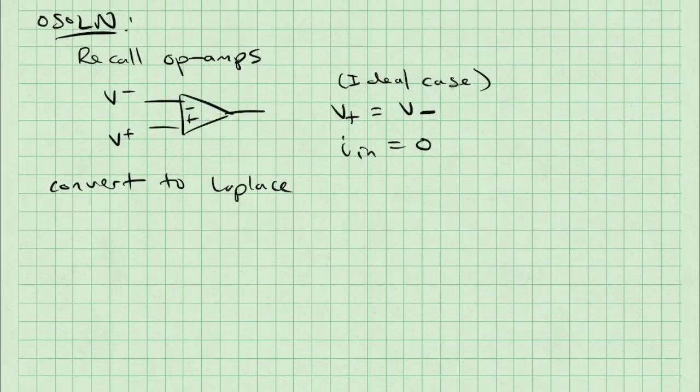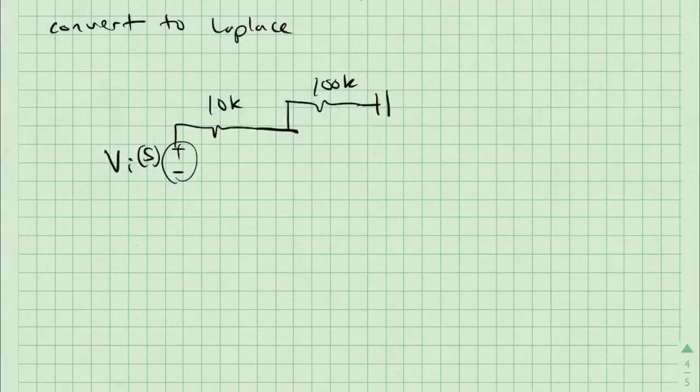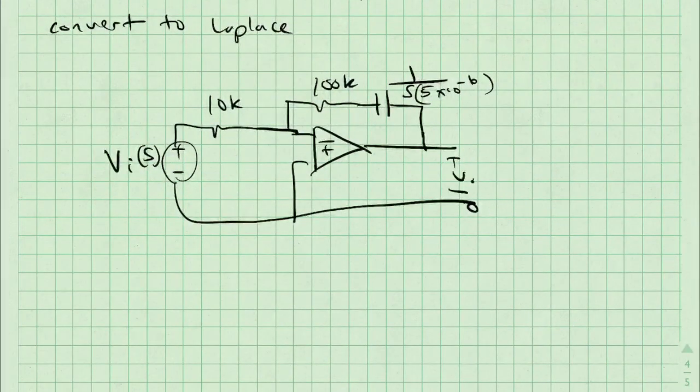The next thing I'm going to do is find the Laplace equivalent circuit. The only thing that we really have to convert other than VI of T to VI of S and V0 of T to V0 of S is that capacitor, which is 1 over S times the capacitance, which is 5 microfarads, which yields 200 K over S.